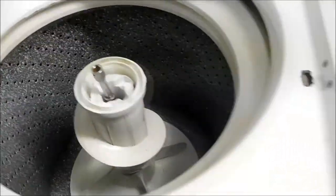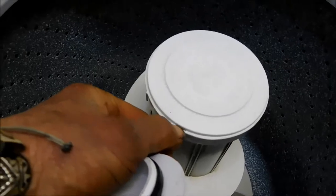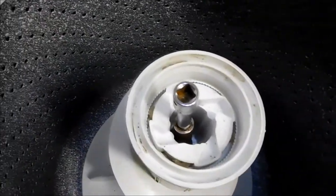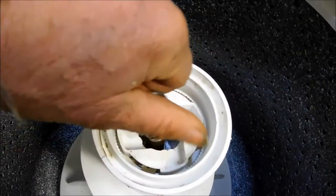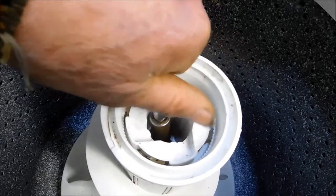Okay, on these particular ones, there's a little hole right here. You can just pop this off. Once you get that off, you can stick a 7/16 socket down to unscrew the main bolt that holds the agitator in place.